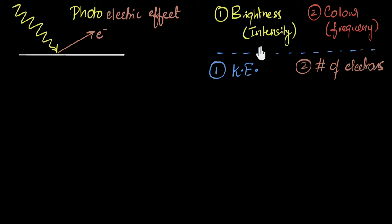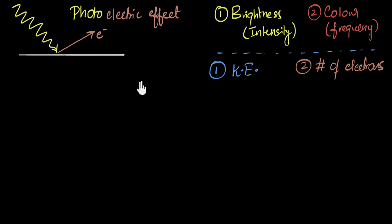Let's start with the brightness of light. If you think of light as a wave and increase the brightness, increasing its intensity and energy, what would you expect to happen to the kinetic energy of the ejected electrons? If you're providing more energy to the electrons by increasing the intensity, you'd expect electrons to come out with more energy. So we would expect more brightness to give more kinetic energy, and less brightness to give less kinetic energy.